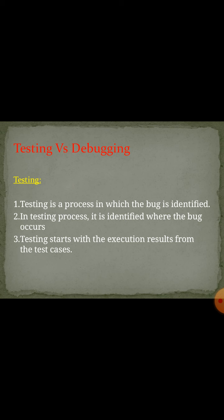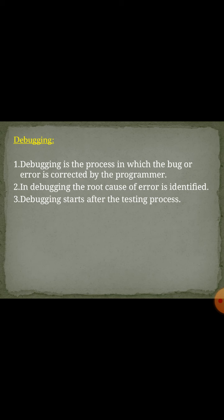Next, testing versus debugging. Testing is a process in which the bugs are identified. In the testing process, it is identified whether the bug occurs. Testing starts with the execution result from the test case. Debugging is the process in which the bugs are corrected by the programmer. In debugging, the root cause of the error is identified. Debugging starts after the testing process.